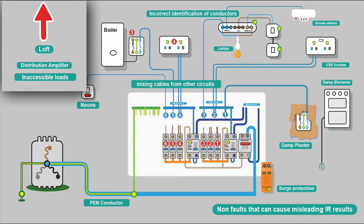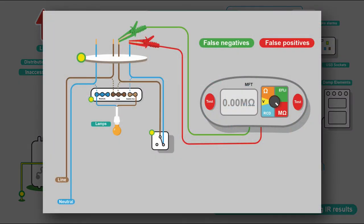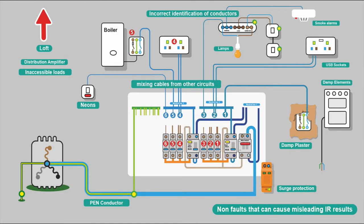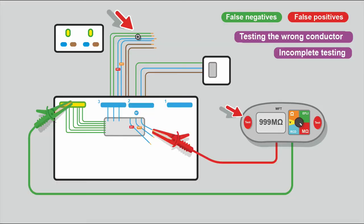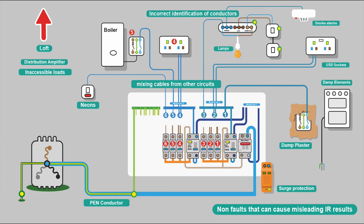Things like cookers can have damp elements which can bring your readings down. Surge protection. Inaccessible locations as well. You often get built-in kitchens where you can't get to the plug for the fridge, for example. That's going to pull your readings down because you can't disconnect. This is more periodic, but up in the loft you're going to have things like distribution amplifiers which you forgot about. Incorrect identification of conductors. You might be testing between the live and switch live, for example. You might think you're testing the neutral. So good knowledge of what you actually are testing, what you are testing between the various conductors. And also mixing cables from other circuits. Quite easy to get the neutrals mixed up if they haven't been put on the board correctly and labeled correctly. You might be testing cables from different circuits.